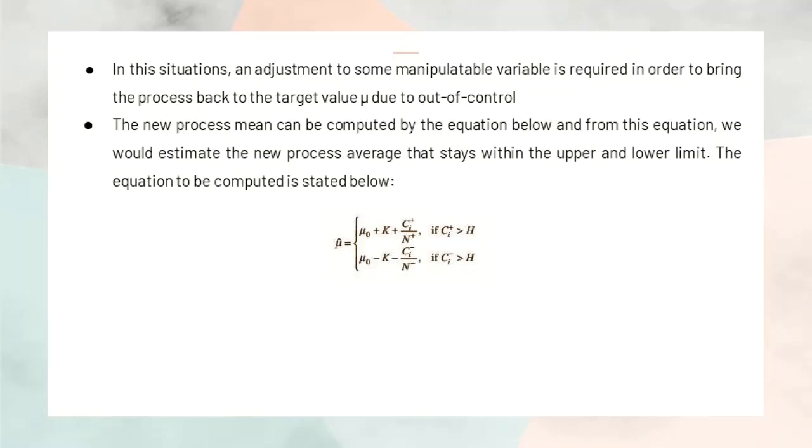In this situation, an adjustment to some manipulatable variable is required in order to bring the process back to the target value which is mu due to out of control. The new process mean can be computed by the equation below.